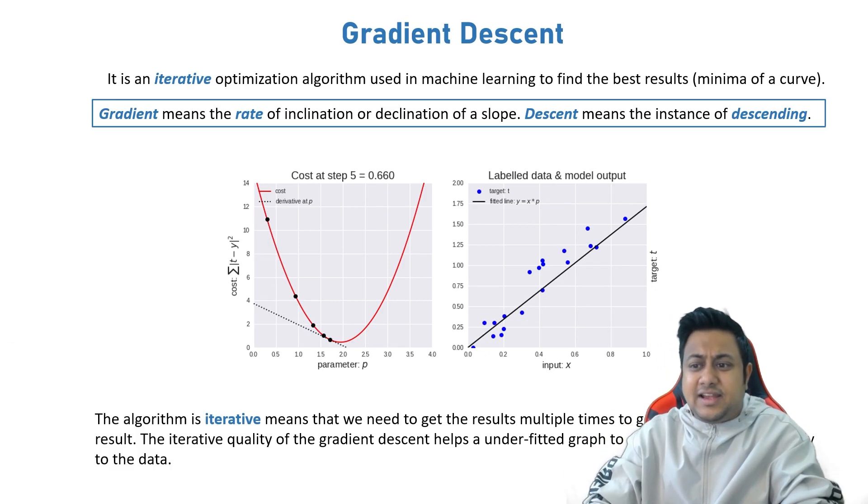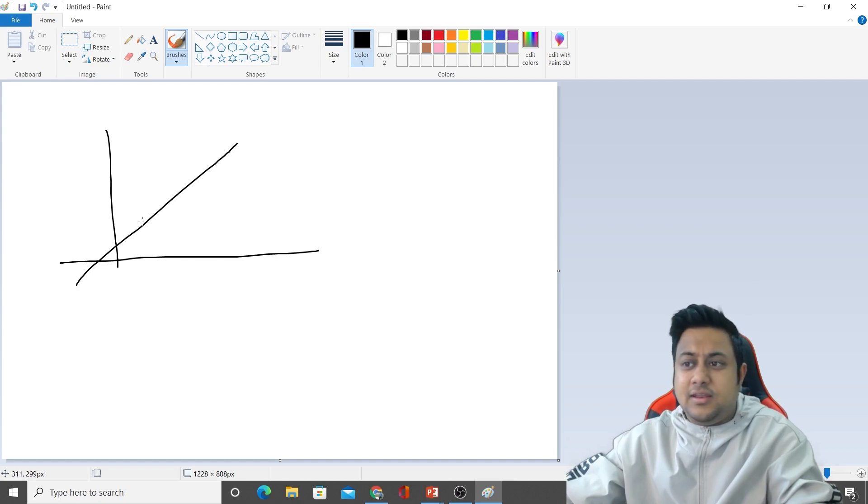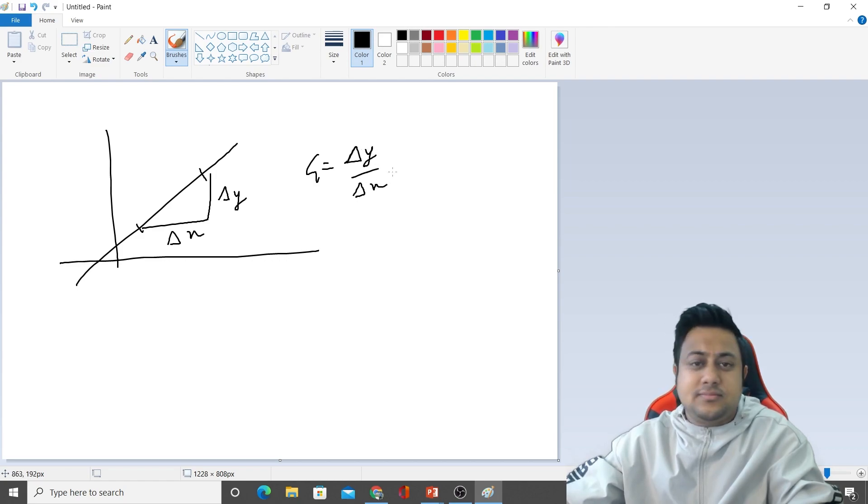What exactly is gradient? Gradient is simply, if you consider a line like this, the gradient will be change in y with respect to change in x, which means gradient is nothing but delta y divided by delta x.